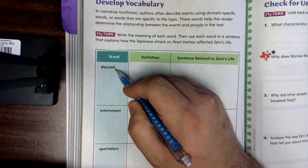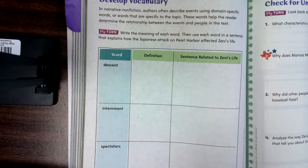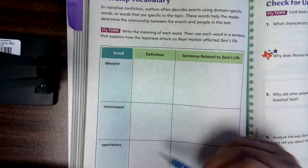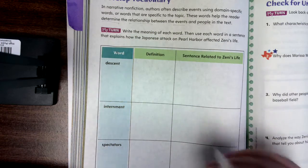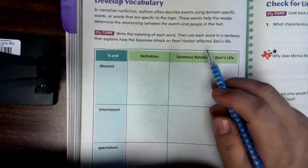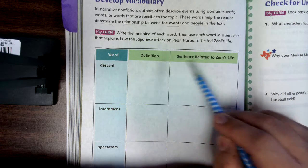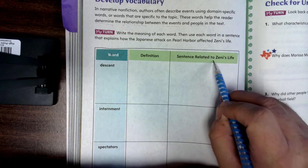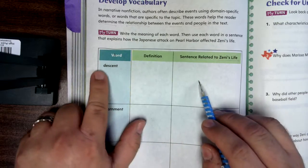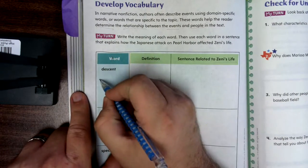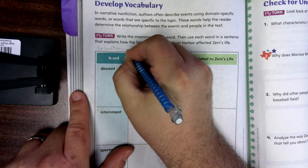You are to write the definition for these three words: descent, internment, and spectators. Remember, you can go back in the story and look up the definition. If you're using the online version, you can just press the word and find the definition. After you do that, you need to write how the word relates to Zinni's life — you're relating back to the story on how this word affects his life. If you need help, go back to the text.